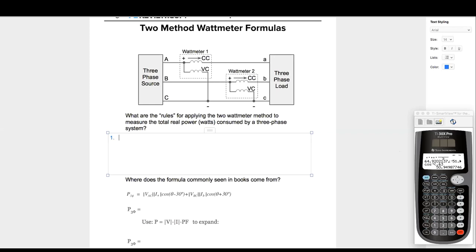So rule number one, the negative voltage reference for both meters must be on the same phase. Let's look up here. Do we follow that rule? Negative reference for wattmeter one, C phase. Negative reference for wattmeter two, C phase. Good to go.